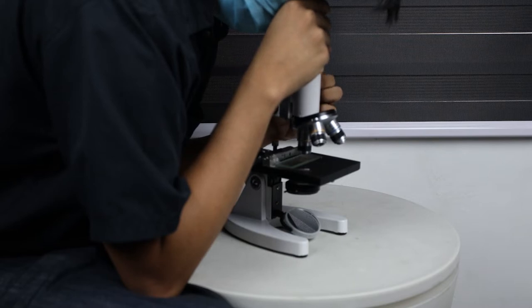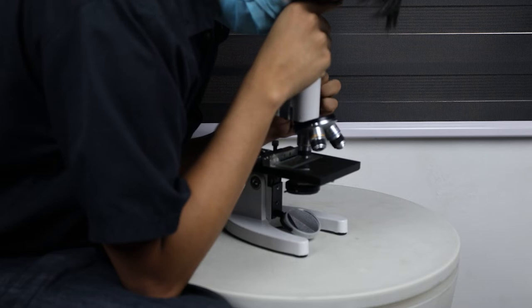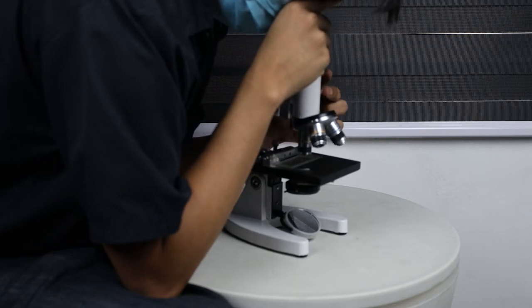Step 4: Adjust the coarse focusing knob to bring the slide into focus. Then lock the limit stop screw to avoid impact damage between the objective and slide. Adjust the fine focusing knob to get the image clear.